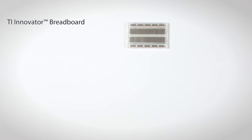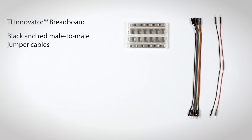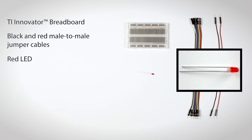You'll also need these components from a TI Innovator breadboard pack: the TI Innovator breadboard, black and red male-to-male jumper cables — separate them from the bundle that came in the pack — and a red LED. Notice that one leg is longer than the other. The long leg is the positive pin, or anode. The short leg is the negative pin, or cathode.